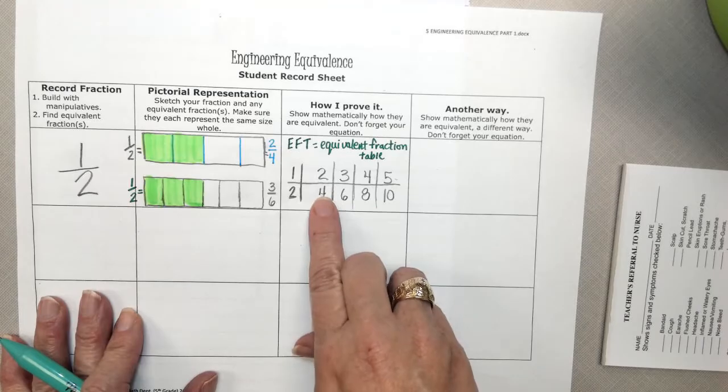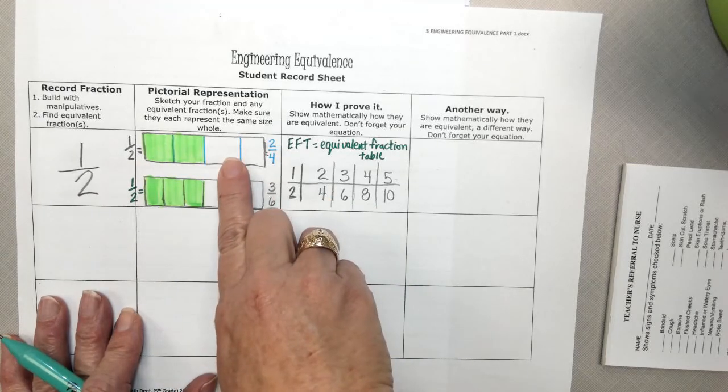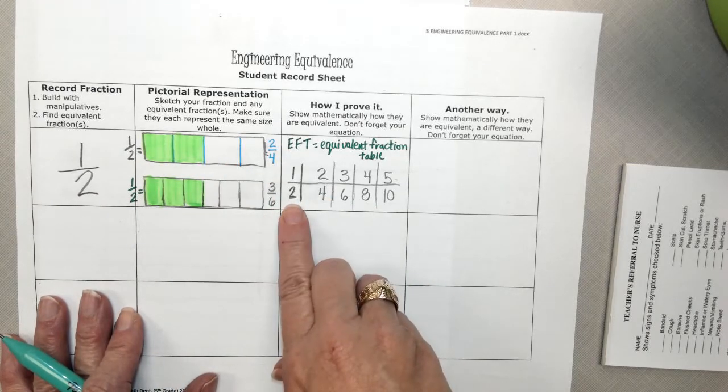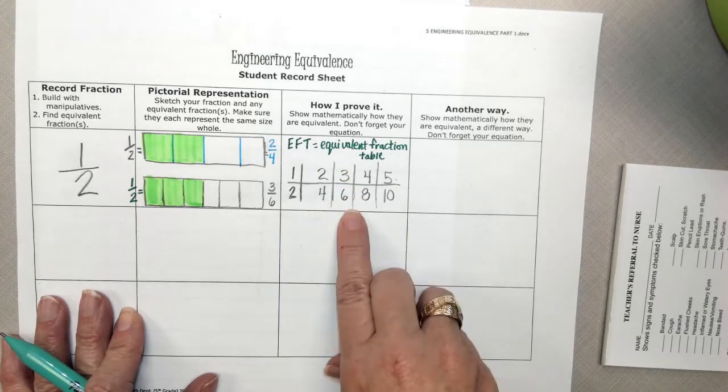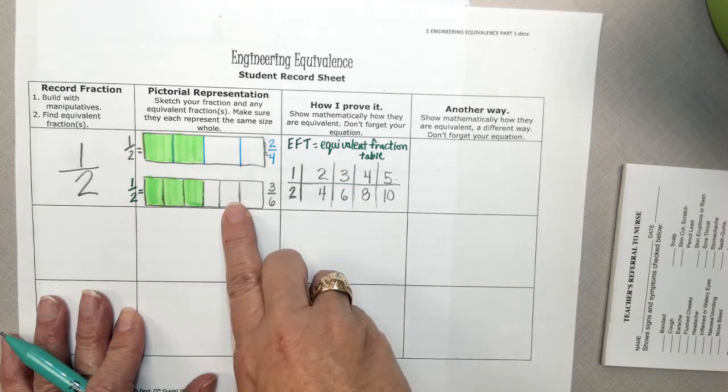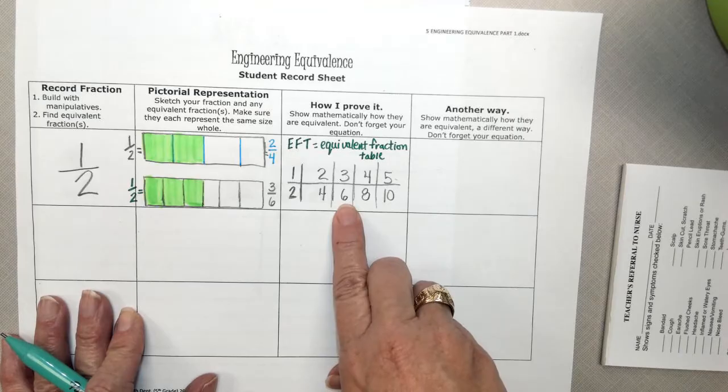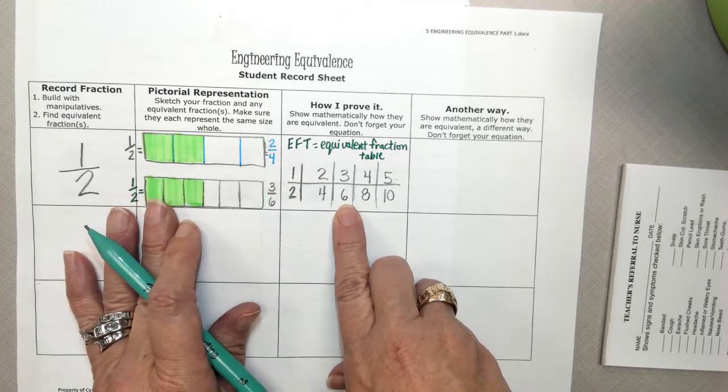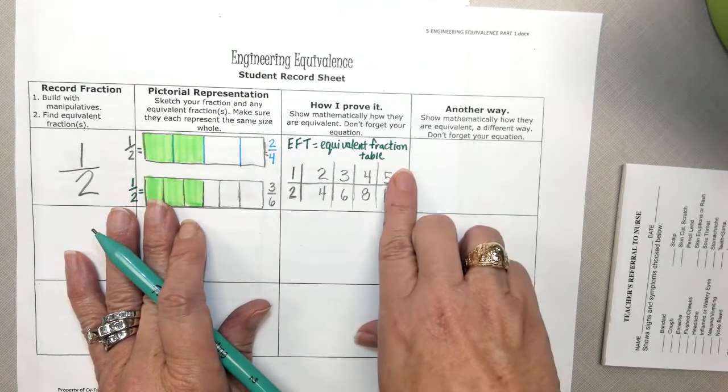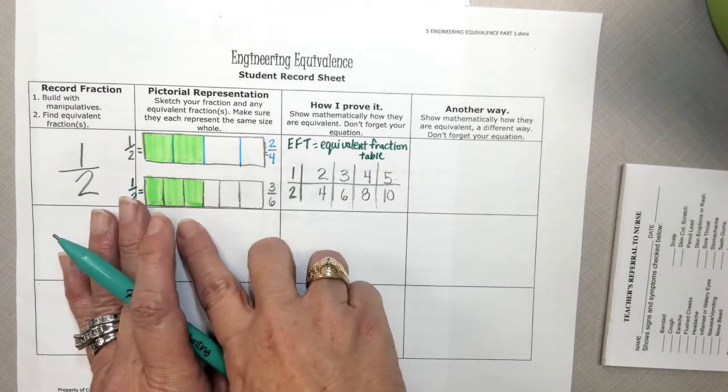That 2 fourths is the same picture that we drew over here, is the same as 1 half, right? And 3 sixths, which is the same picture we drew over here, is the same, right? They are equal. Now, was this faster, this equivalent fraction table, than drawing a picture?